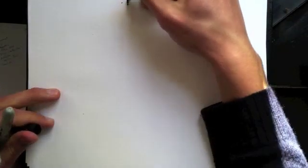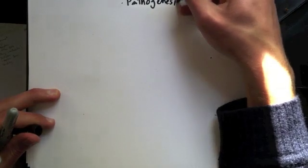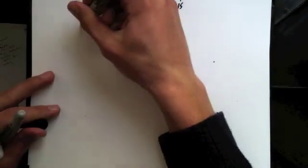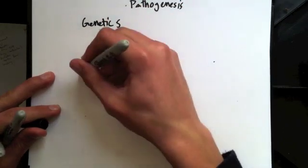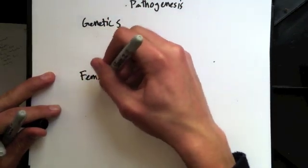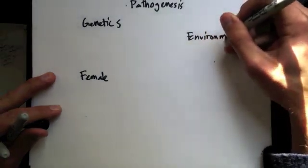So lastly, we're going to cover the pathogenesis of lupus. There are basically three main factors: genetics, being a female, and the environment, which is just sort of a catch-all term.